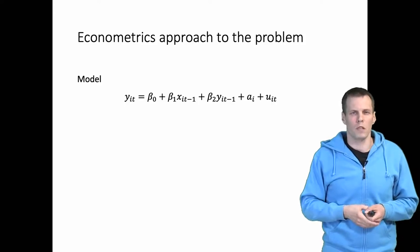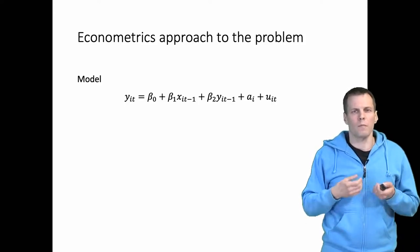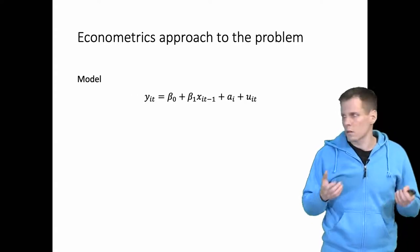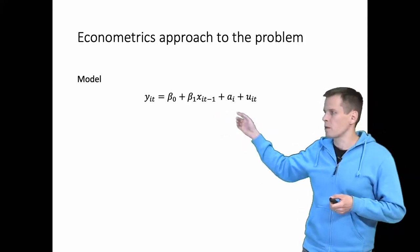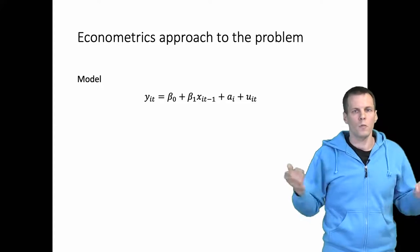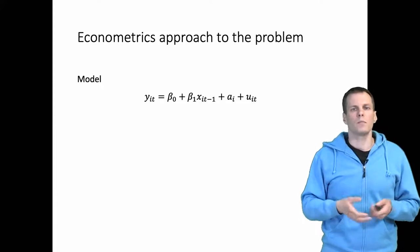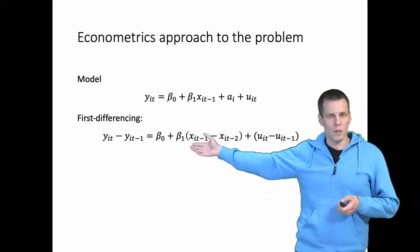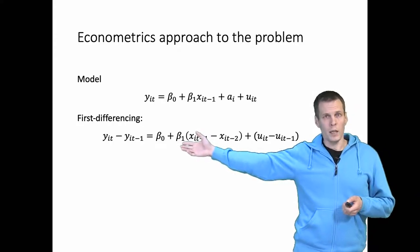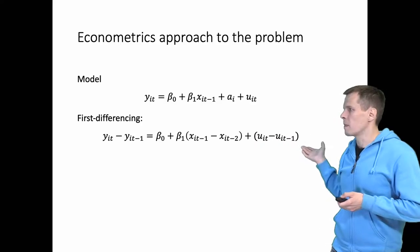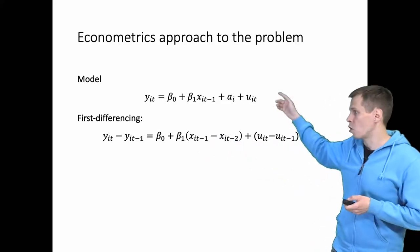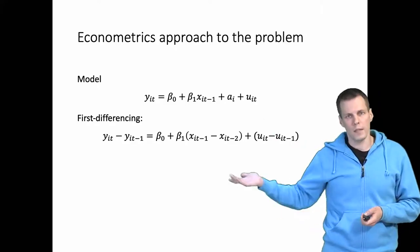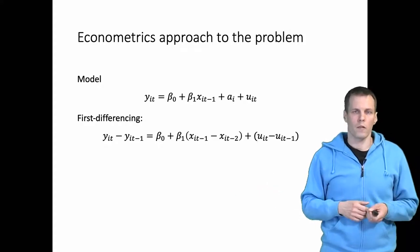Let's first look at a simpler model without Y as a predictor — just the X-to-Y relationship with the fixed effect A_i. One way of dealing with this problem is to apply first differencing: we subtract the past value of Y and the past value of X, which eliminates the unobserved effect. We estimate with OLS and we have consistent estimates.